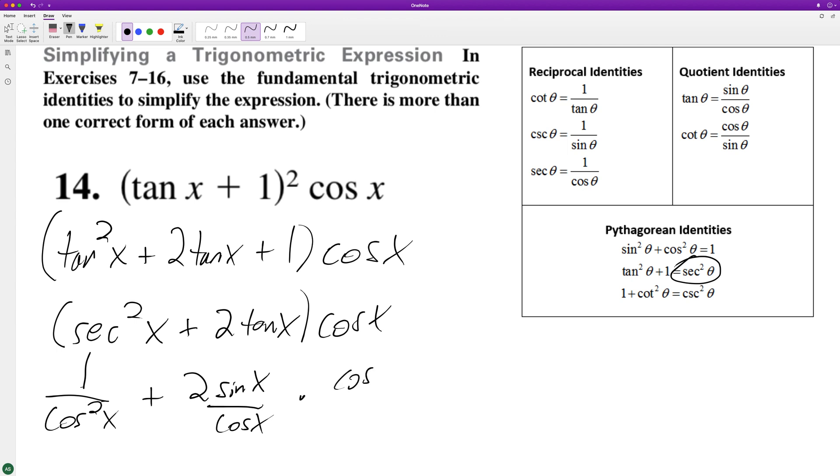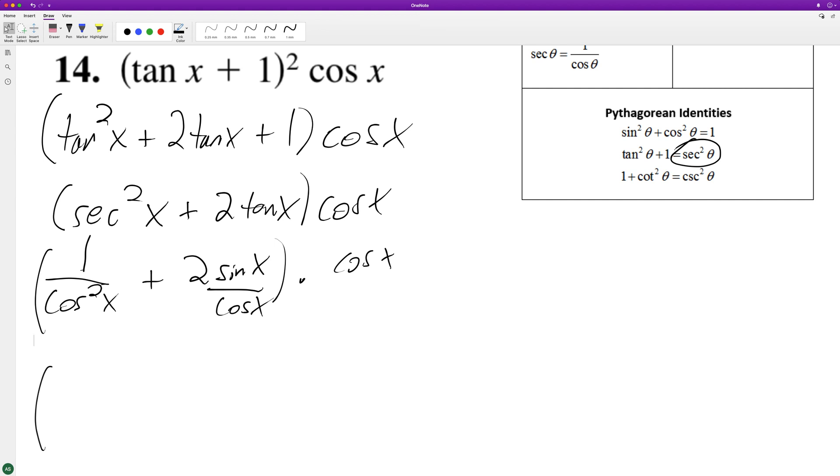And then distribute the cosine X across all of these. So we end up with just secant X, because one of the cosines on the bottom cancel out. Plus this cancels out, so we get two sine X.